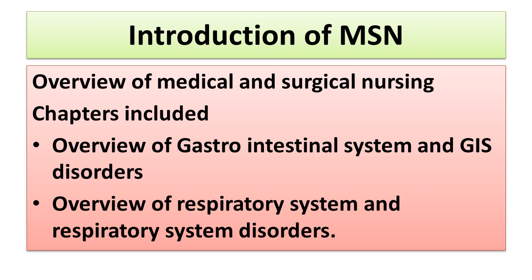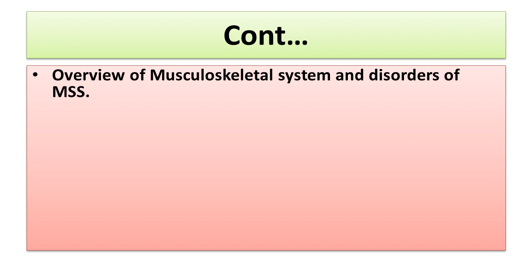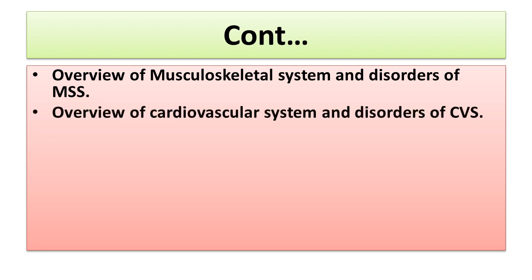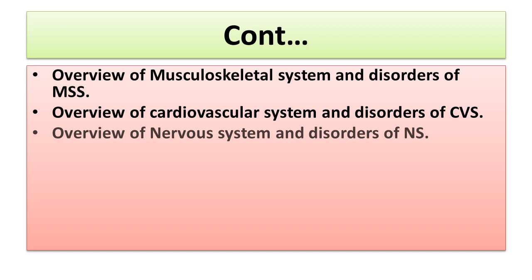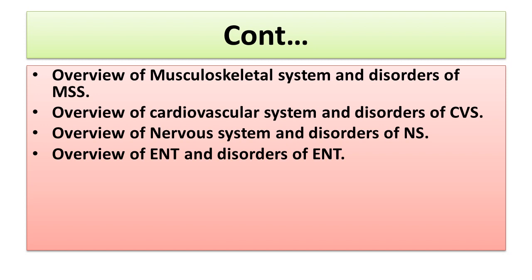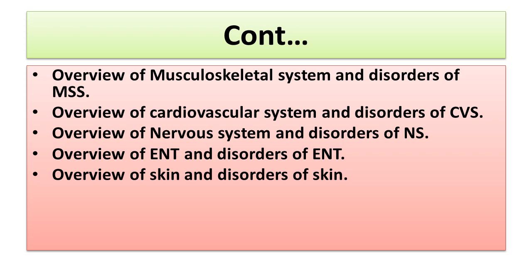Remember that when discussing the diseases of any system, first of all we have to review the anatomy and physiology of that system — by this way we will be able to learn very well. We will also cover the overview of the musculoskeletal system and its disorders, the cardiovascular system and its disorders, the nervous system and its disorders, and the overview of ENT and disorders of ENT.